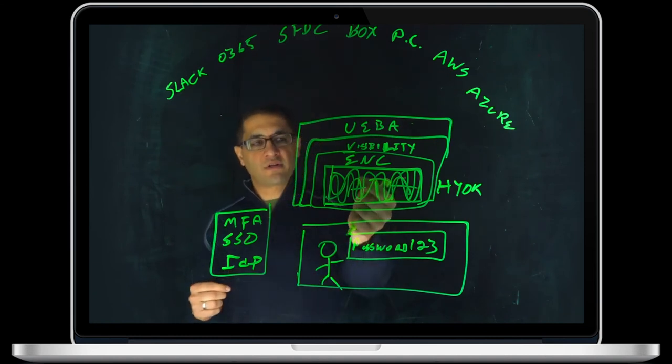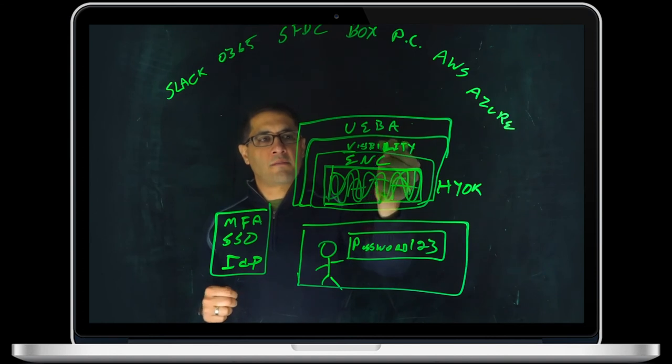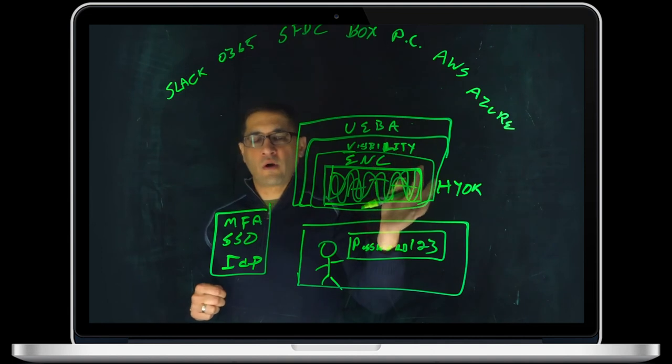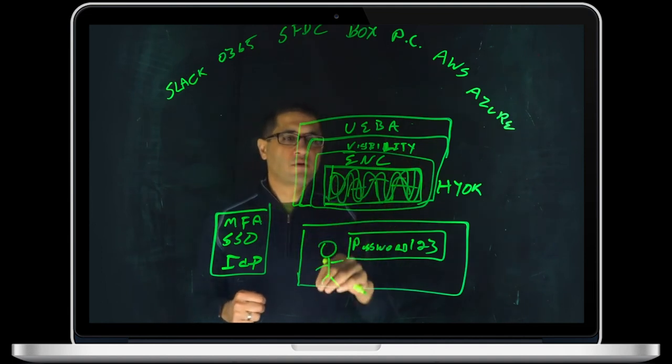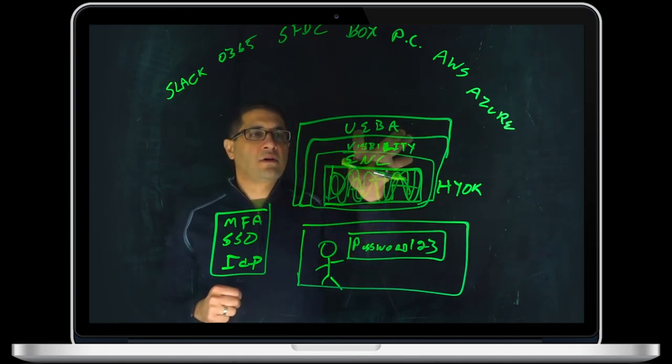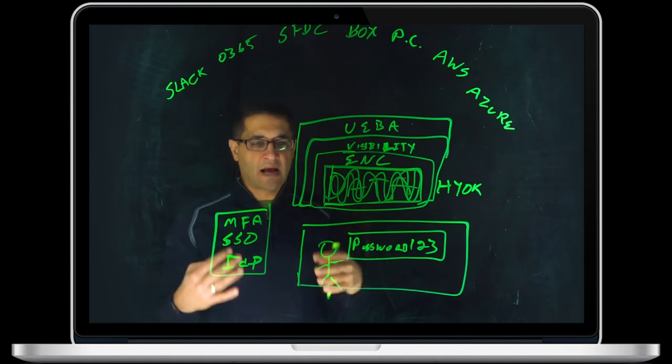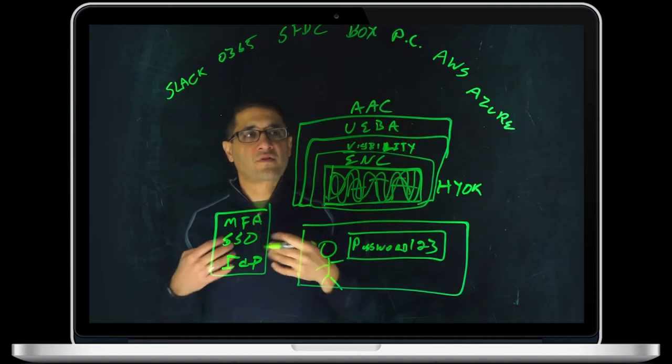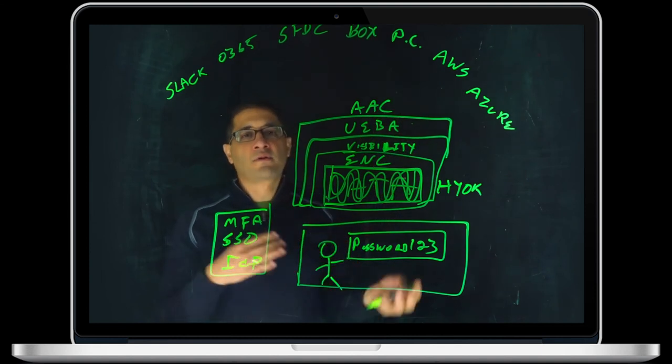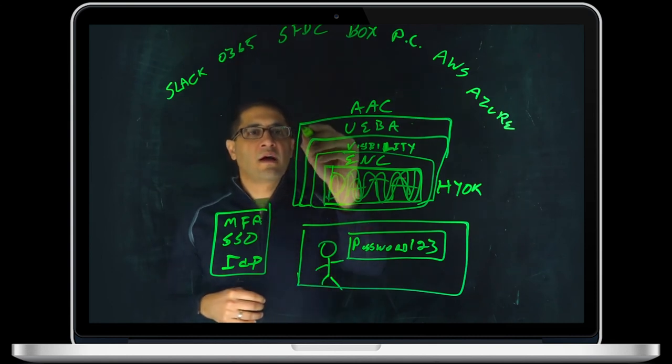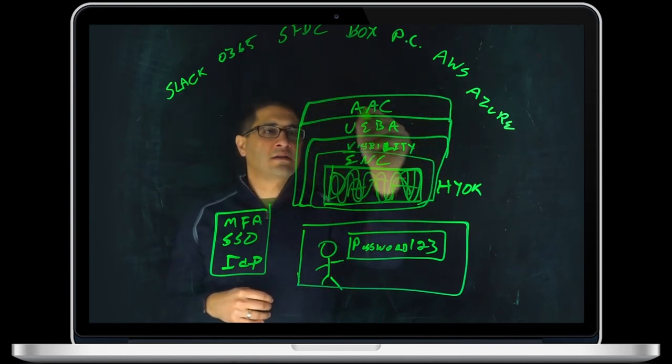So the ability to protect that data at rest and in motion, apply visibility to that data so I know where it is, wherever it goes, and understand first and foremost what and where my data is. UEBA to understand the users who are accessing and their risk level. Adaptive access control. So I can use that risk level and apply policy to it. And then, look, last but not least, sometimes you absolutely have to be able to share that data.